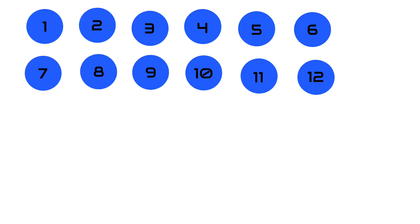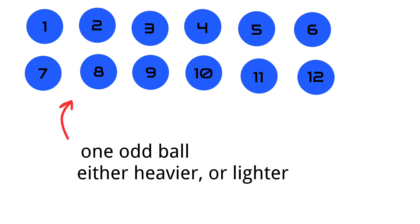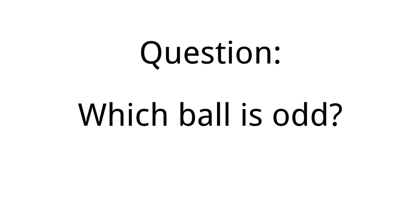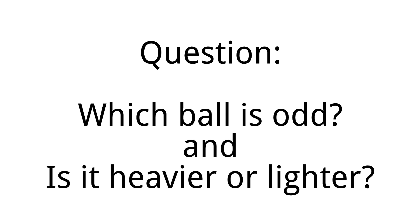Now let's attack the 12-ball problem. You have 12 balls. You know one ball is either heavier or lighter than the rest, but the tricky part is you don't know which way. You still have a balance scale, but this time you can use the scale 3 times. You need to identify the odd ball and whether it is heavier or lighter.